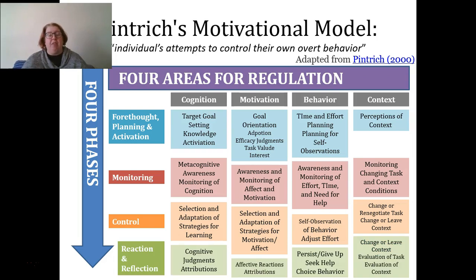Finally, we're reacting and reflecting after we complete the task. We're making judgments about attribution — do we think this was our fault, our teacher's fault, or luck? We're having an emotional reaction, motivation and attributions to our task. We might be giving up or seeking help, or making a choice about behavior. We're evaluating the task and what we might do in the future. This motivational model is really about our individual attempt to control our own behavior — self-regulation is really about how we're motivated to change our behavior.